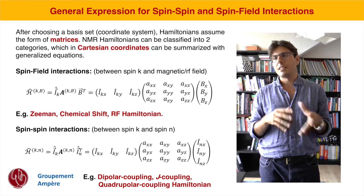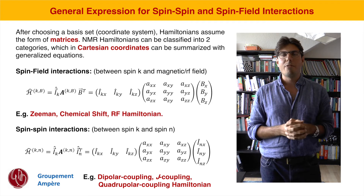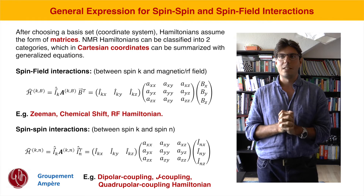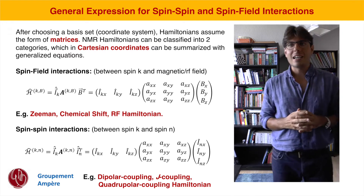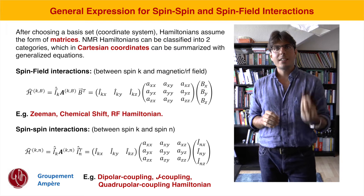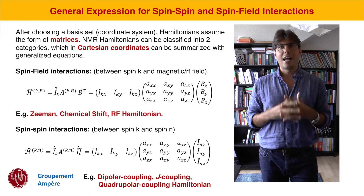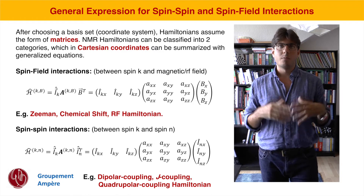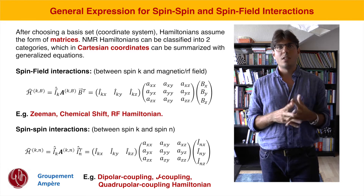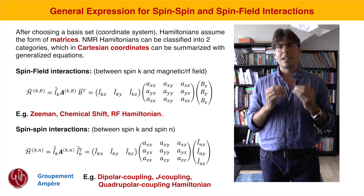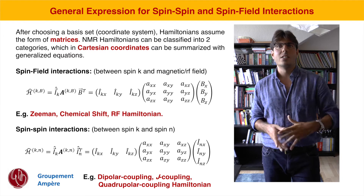Spin-field interactions are all interactions that take place between one nuclear spin and, for example, the external magnetic field B0 or the RF field used to excite transitions. The general form of a spin-field interaction Hamiltonian is: you take the vector of the nuclear spin operator, multiply it by a coupling matrix A, and multiply again by the vector of our field — either the B0 field or the RF field. The only thing that changes between different interactions is the values assumed by this coupling matrix, which describes the strength and orientation dependence of the interaction.